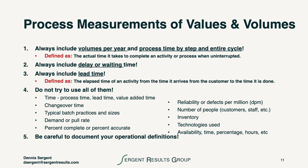We have several ways to think about the measurements of process values and volumes. We always want to make sure we're thinking about volumes per year and process time by step and by the entire cycle. It's always important to include delay or waiting time, and also lead time if there are processes that must occur before you can proceed to the next step. We urge people not to try to use all of these measures — you can see a list in the slide deck. Be careful to document your operational definitions so that as you use a number, everybody understands it with no questions.